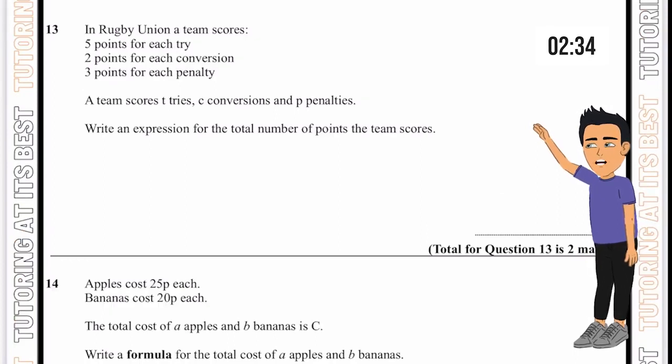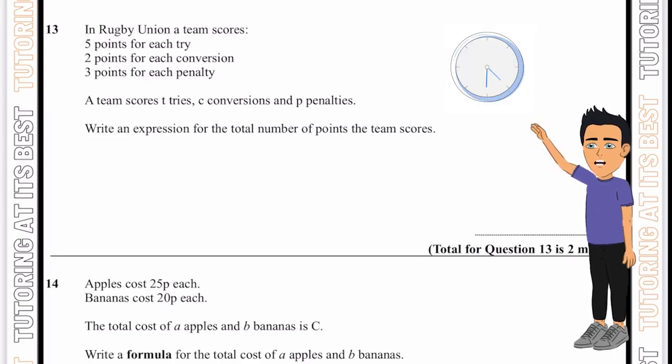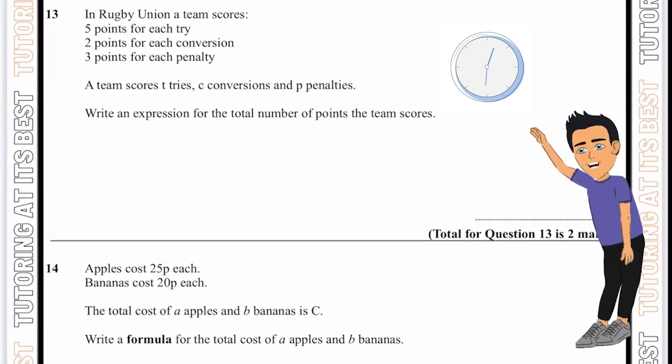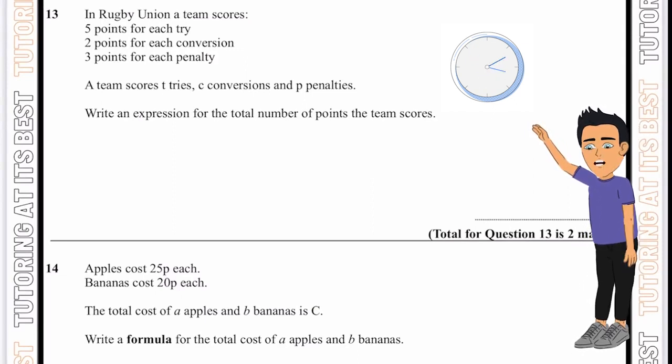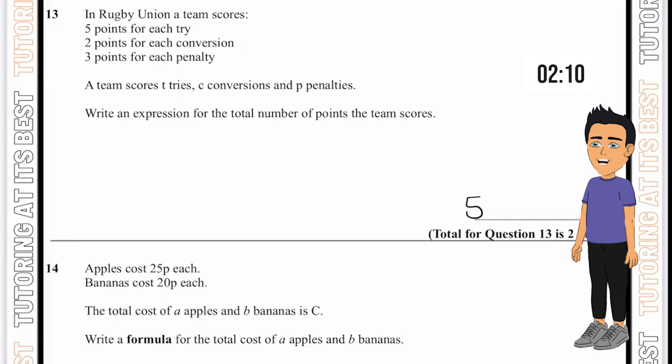I'm now going to hand it over to you. Press pause, attempt question 13 and 14, and we're going to go through it right away. We've got a rugby union team, which has five points for each try, two points for conversion and three points for a penalty. Let's write an expression for the total number of points. We'll go for 5t plus 2c plus 3p. That's all putting it together in one expression.